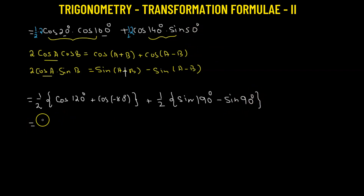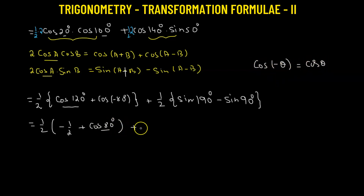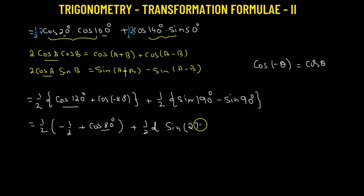Now let's substitute the values. Cosine 120° is a standard value equal to negative one half. Cosine(−80°) equals positive cosine 80° since cosine is an even function. Sine 90° equals 1. For sine 190°, we express it as sine(270° − 80°).